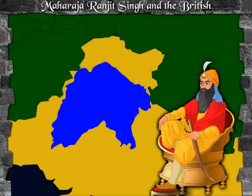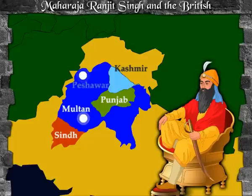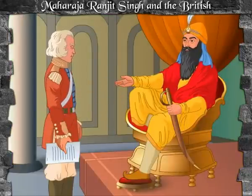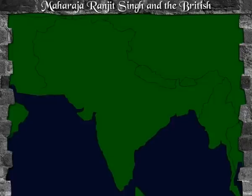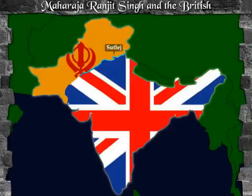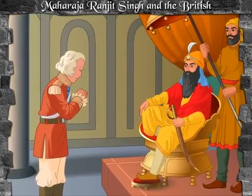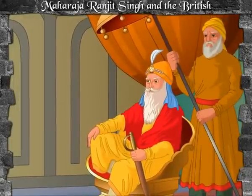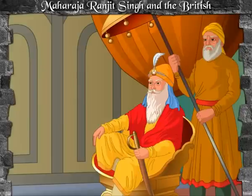In 1799, Ranjit Singh captured Amritsar, Multan, Kashmir, Peshawar, and Lahore, making Lahore his capital. By 1820, Ranjit Singh had become one of the most powerful rulers in the northwest, unifying all members of the Sikh community. Under his rule, the Sikh Empire spread to the regions of Punjab, Sindh, Kashmir, Multan, and Peshawar. The British entered into a treaty with Maharaja Ranjit Singh called the Treaty of Amritsar, which allowed the British to obtain territories to the east of the River Sutlej while Ranjit Singh confined his conquest to the north and west of the Sutlej.